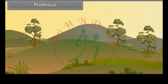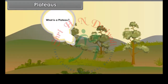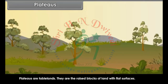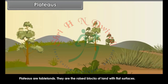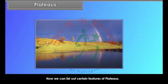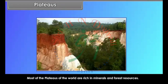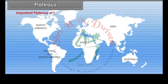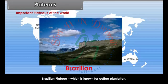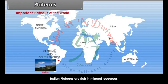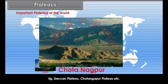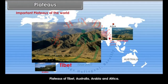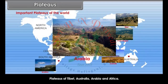Plateaus. The next type of landform is plateaus. Plateaus are tablelands — raised blocks of land with flat surfaces. Most of the plateaus of the world are rich in minerals and forest resources. Some plateaus are known for plantation. Important plateaus of the world: the Brazilian Plateau, which is known for coffee plantation; Indian plateaus are rich in mineral resources, for example, Deccan Plateau and Chota Nagpur Plateau; and plateaus of Tibet, Australia, Arabia and Africa.